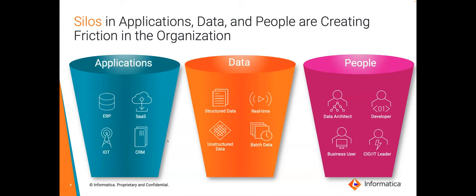Why is that? Because many organizations have silos in applications, data, and people that create friction. For instance, an organization's ERP app does not share data with its CRM store. Structured data could be in a relational database, whereas unstructured data could be in an object store, and both have different views of the data set. Organizations also have many different teams and lines of business that use different technical stacks, creating friction and silos.